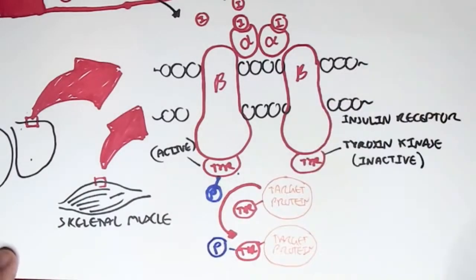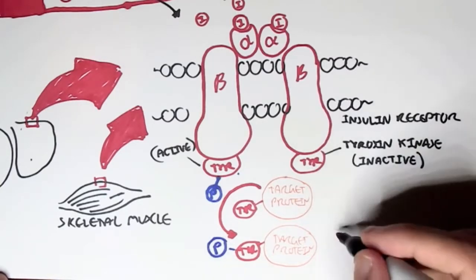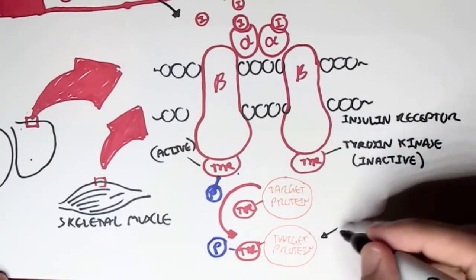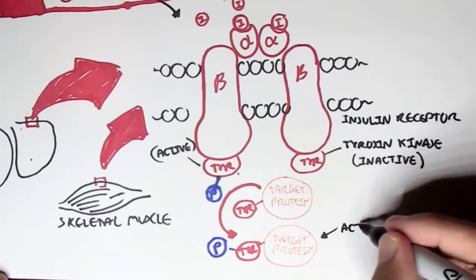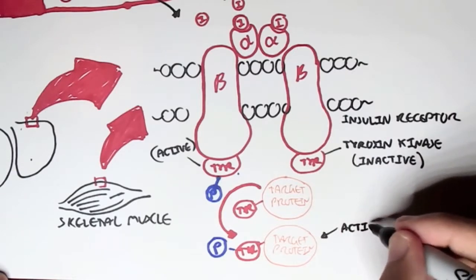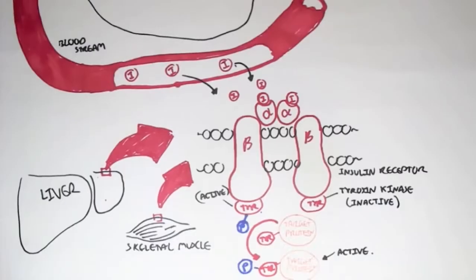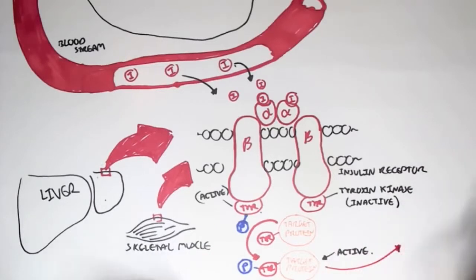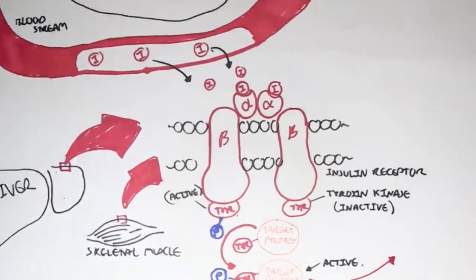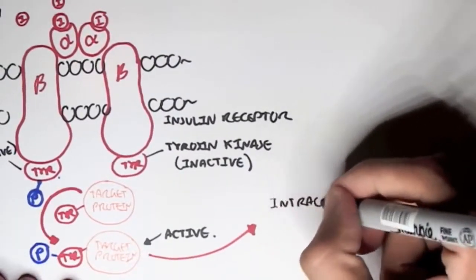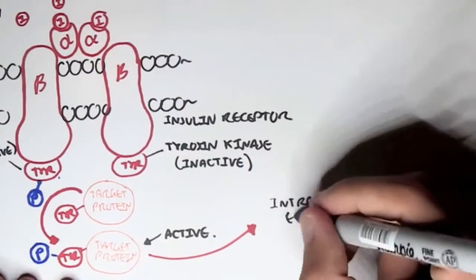So the target protein becomes phosphorylated — it will have the phosphate group attached to the tyrosine amino acid. Because this target protein is now phosphorylated, it is active, and it can then cause the intracellular effects of insulin.